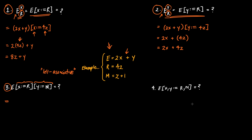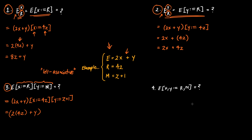Let's start by substituting in what we know. E is 2X plus Y. We're going to take all occurrences of X and replace them with R, where R is 4Z. Then we're going to take all occurrences of Y and replace them with M, where M is Z plus 1. The first step is to perform the leftmost substitution: replace all occurrences of X with 4Z, giving 2 times (4Z) plus Y, with brackets around the entire expression, and then the substitution Y replaced with Z plus 1 still pending.